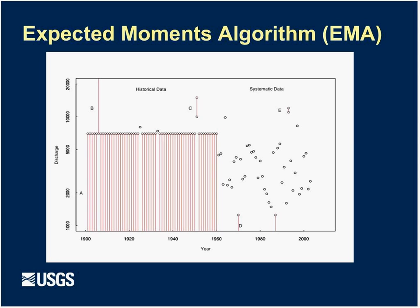There is also something new: Bulletin 17b had methods for incorporating historical information, but there's a newer approach called the Expected Moments Algorithm, or EMA, that can incorporate even more historical information. So if you have systematic gauge data but also know that during a particular year the discharge exceeded a certain threshold, or fell within some range, or was below a given value, EMA gives you more flexibility to incorporate that historical information and get better estimates. California's study incorporated this method.